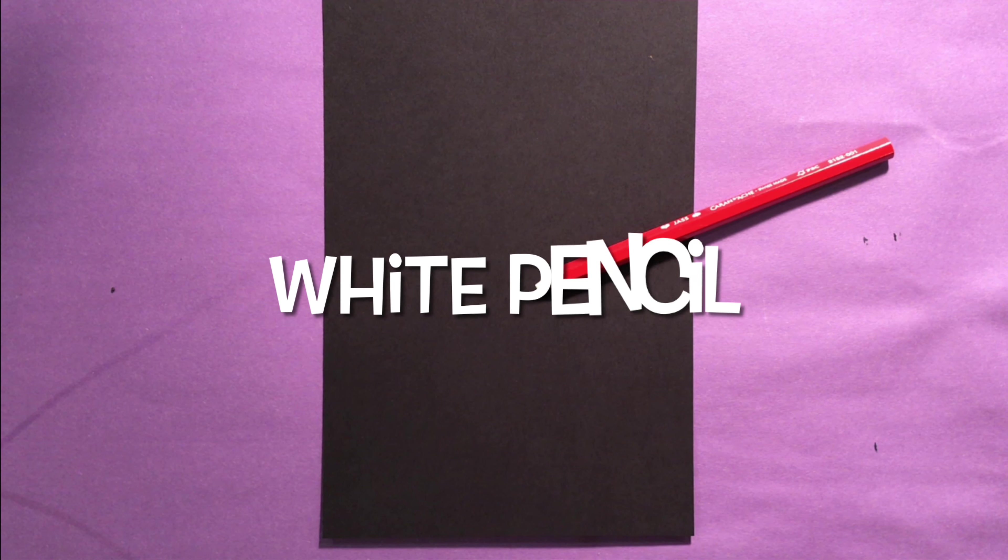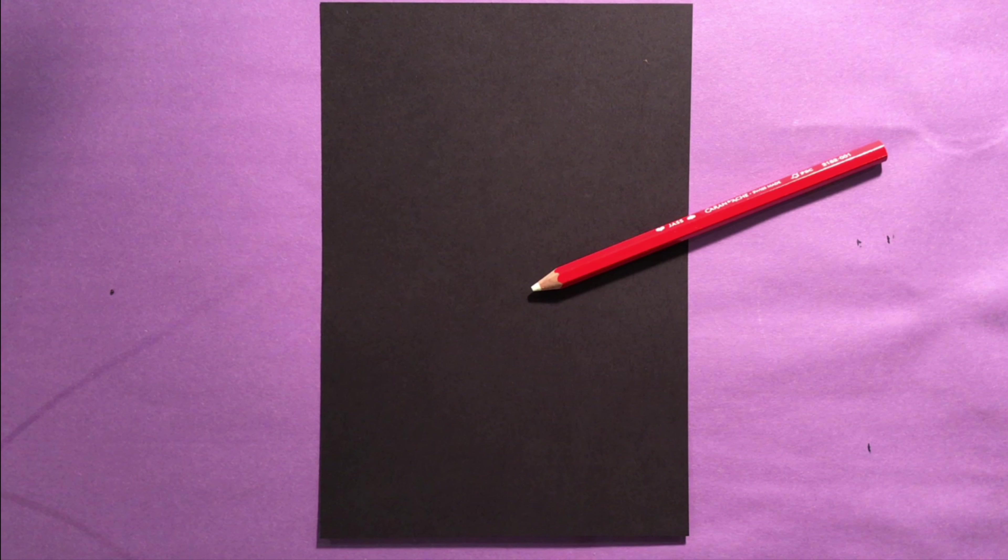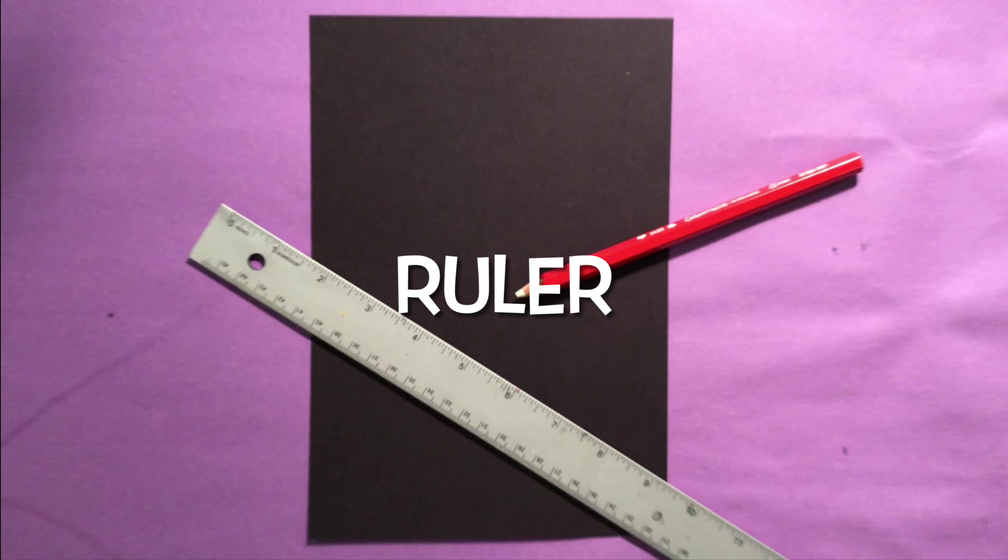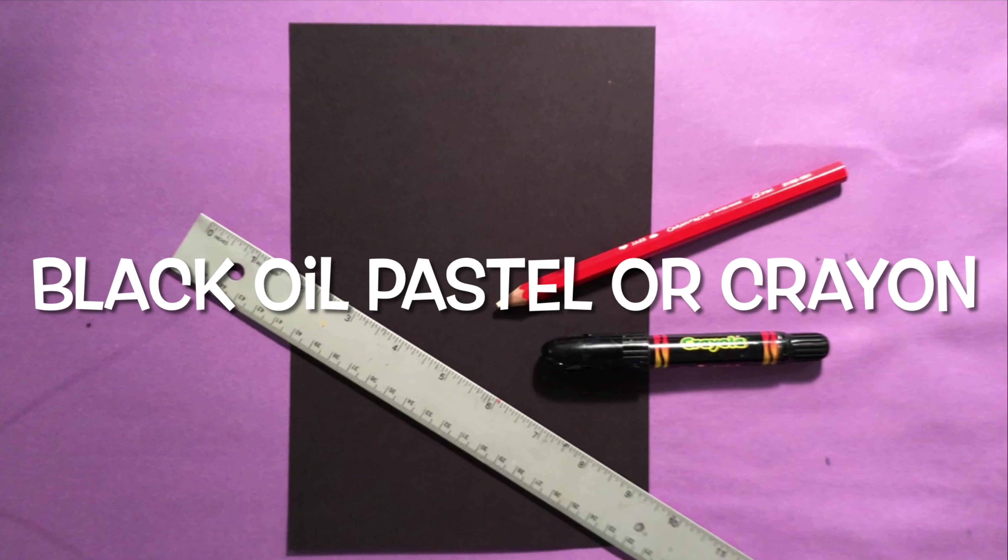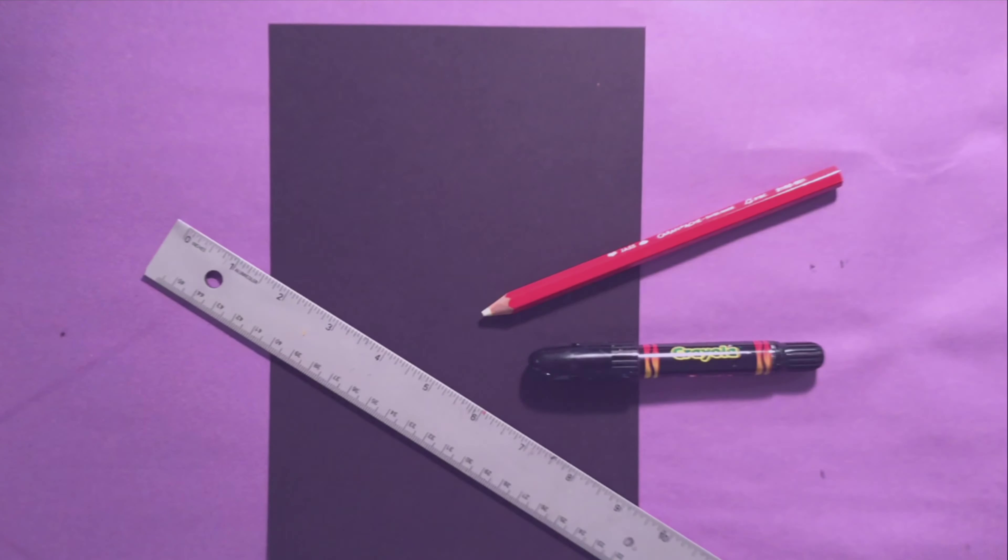All right, time to get our supplies. First, you're going to need some black paper. Any size will do. Then you're going to need a white color pencil or crayon. Remember, a regular pencil won't work. You'll need a ruler, and then a black oil pastel or crayon. I'm using a slick stick. And that's about it. Let's get started.